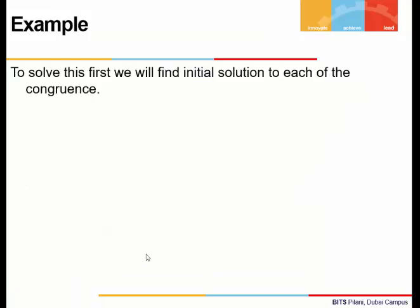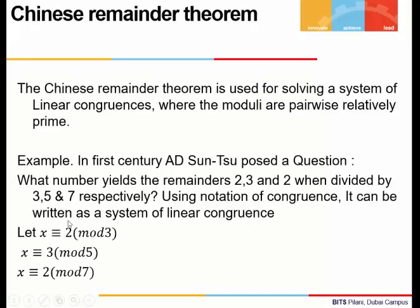So how do we solve such a problem? First we will find the initial solution to each congruence. We see that 2, 3, and 2 satisfy all three congruences. 2 satisfies this, so c₁ we take as 2. 3 satisfies this, so we take the initial solution c₂ to be 3. And 2 satisfies the last congruence, so we take 2 as c₃.